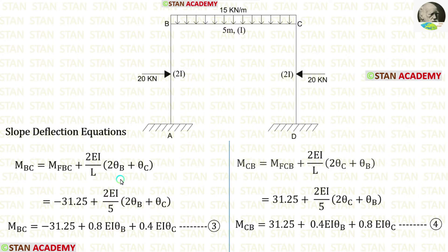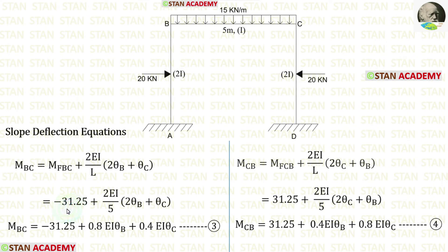Now let us write the slope deflection equations for beam BC. The length of BC is 5 meters. We apply the fixed end moments and finally derive two slope deflection equations for beam BC.